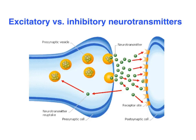So here we've got a presynaptic neuron and as a result of an action potential, it's started in the cell body and conveyed along the axon to the axon terminals where we've got some vesicles that are storing the neurotransmitters. Those neurotransmitters are going to be released into the synapse, and some of these are going to bind with the receptor sites on the postsynaptic neuron — more about that in a future clip.